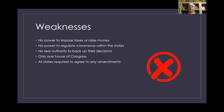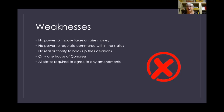They had no power to regulate commerce between the states, and no real authority to back up any of their decisions. At this point there was only one house of Congress — not the three branches we know today. Each state got one representative, and all states had to agree in order to amend the document. You're never going to get 13 people to agree on anything, so this was a very difficult situation.